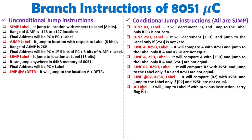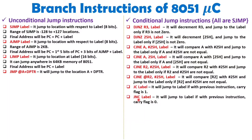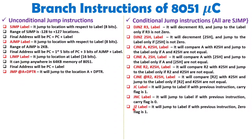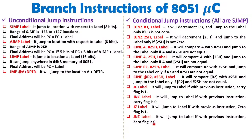JC label is used to jump to the label if the previous instruction resulted in carry flag equal to 1 — JC means jump if carry. JNC, jump if not carry, means if the previous instruction has carry flag equal to 0, then it will jump to the label. JZ instruction means jump if zero — if the previous instruction has the zero flag equal to 1, it jumps to the label. JNZ means jump if not zero — the zero flag should be 0.